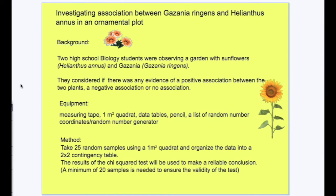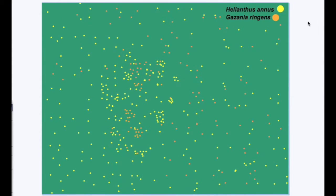Two high school biology students were observing a garden with sunflowers Helianthus annus and Gazania Gazania ringens. They considered if there was any evidence of a positive association between the two plants, or a negative association, or no association whatsoever. So they gathered some materials and they went out into the field to take 25 random samples using a one square meter quadrat. Here is a schematic representation of what the garden looked like with Helianthus annus the sunflower represented by yellow dots and Gazania ringens represented by orange dots.